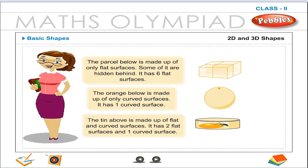It has one curved surface. The tin above is made up of flat and curved surfaces. It has two flat surfaces and one curved surface.